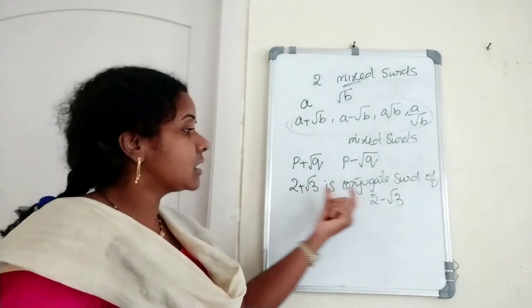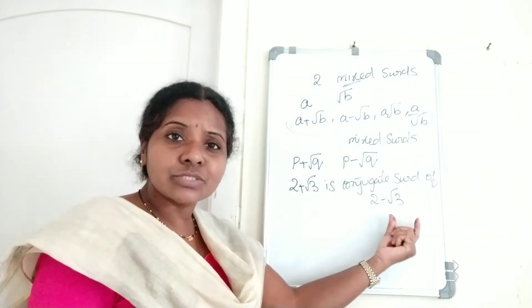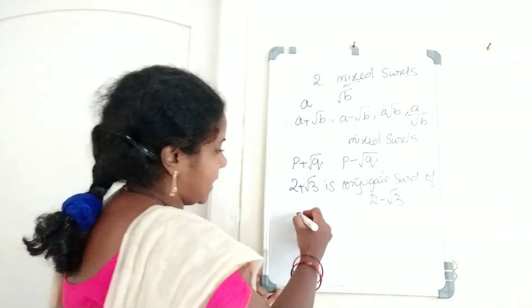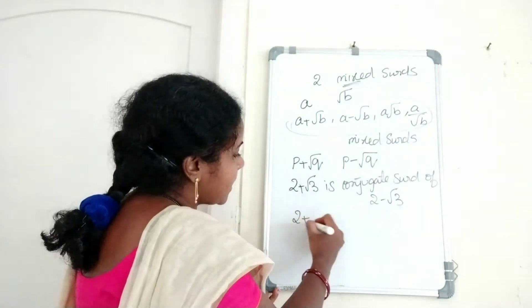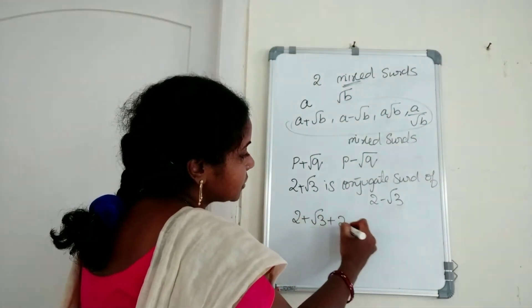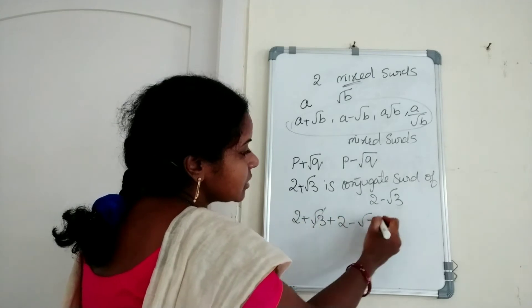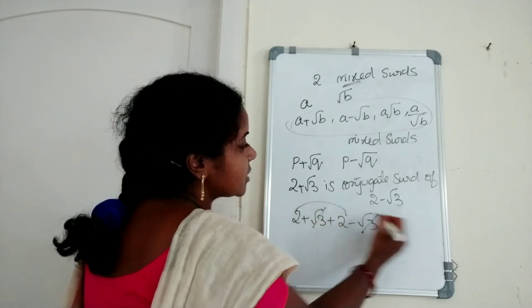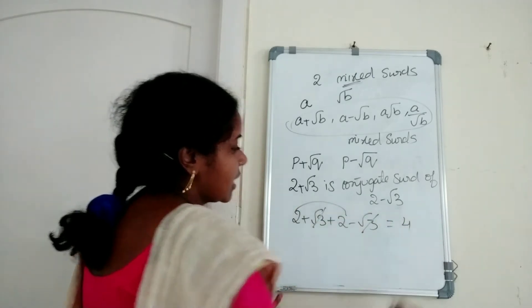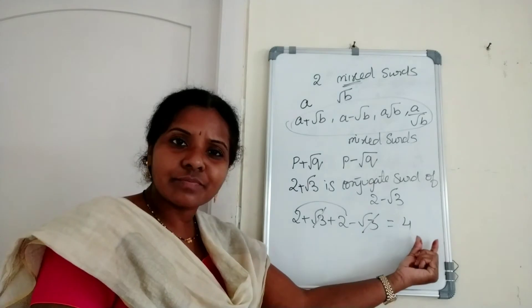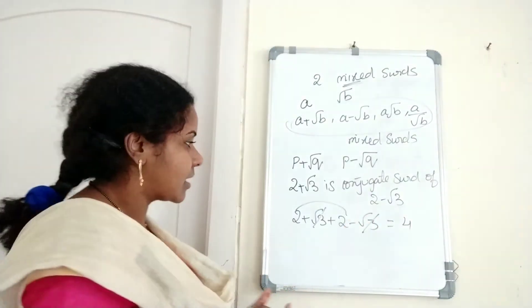Suppose 2 plus root 3 and 2 minus root 3. The sum: 2 plus root 3 plus 2 minus root 3. Plus root 3 and minus root 3 cancel. 2 plus 2 is 4. Here the sum is 4, which is a rational number.